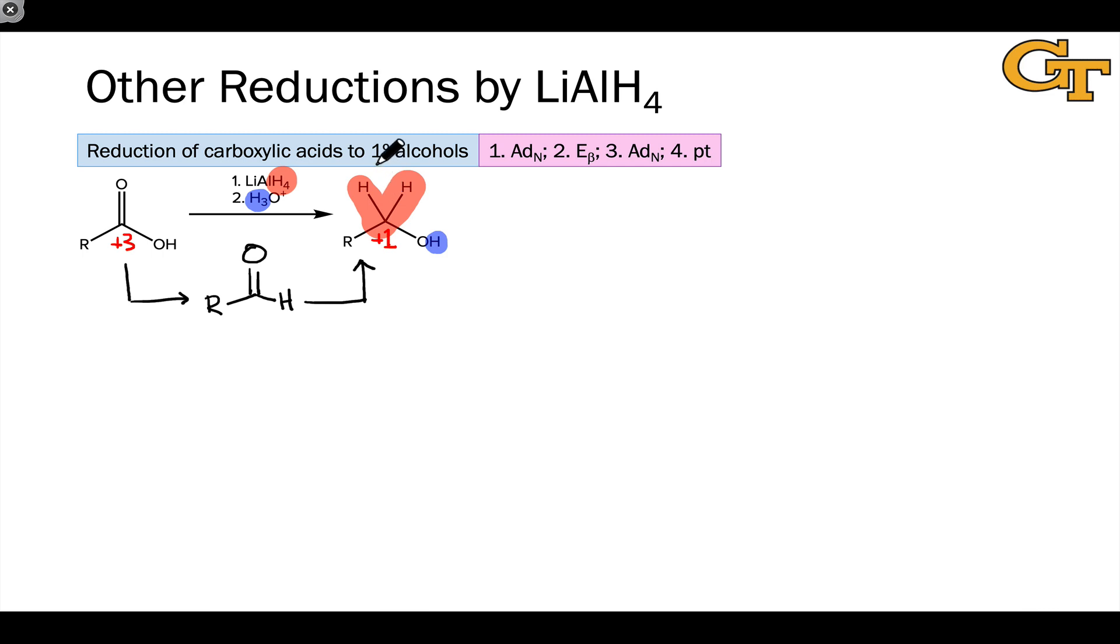So the reduction of carboxylic acids produces primary alcohols through the intermediacy of an aldehyde. I won't show the detailed mechanism but if you're curious about this I encourage you to use these elementary steps to draw it out on your own. And you'll be able to do that for the rest of the reactions we look at here as well.